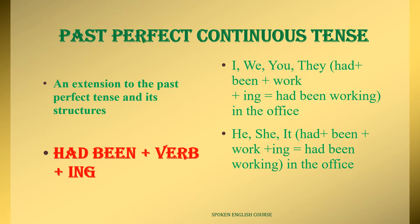The fourth type is past perfect continuous tense. This is an extension of past perfect tense — it's the continuation of past perfect. The format of present perfect continuous tense is has been or have been plus verb plus ing. For past perfect continuous tense, we use only had been plus verb plus ing, for all subjects — I, we, you, they, he, she, it — had been plus verb plus ing.